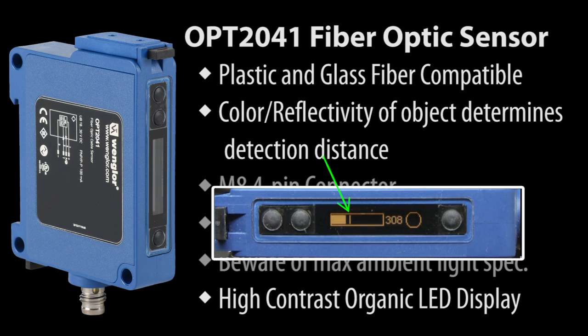This line on the bar graph is the detection threshold. Objects reflecting more light than that will be detected. The width of that line is the width of the hysteresis. You can also see a numeric version of the signal strength and the output status.